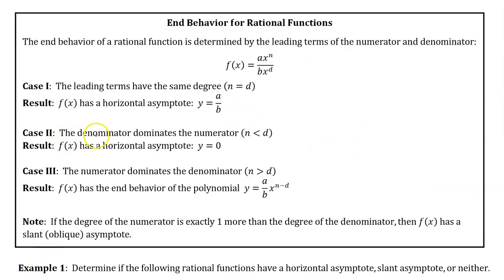Case 2: if the degree of the denominator is greater than the degree of the numerator, then f(x) has a horizontal asymptote y equals 0.